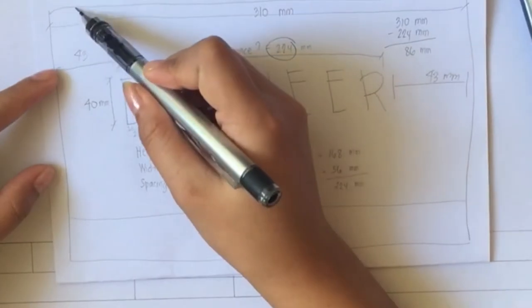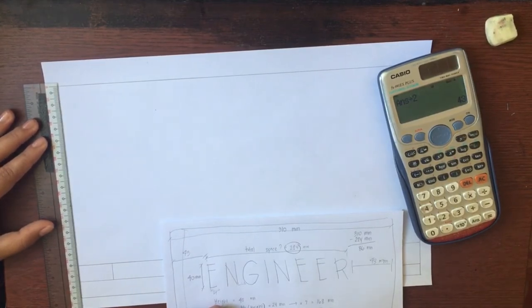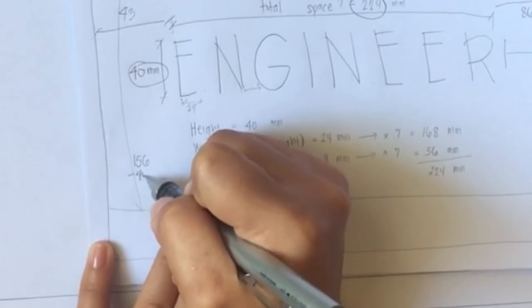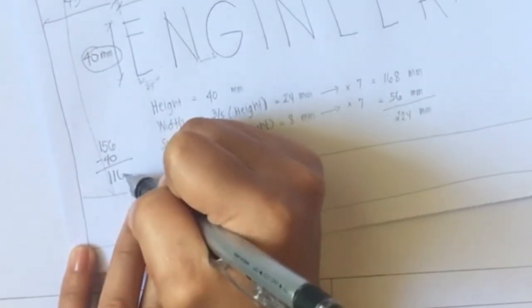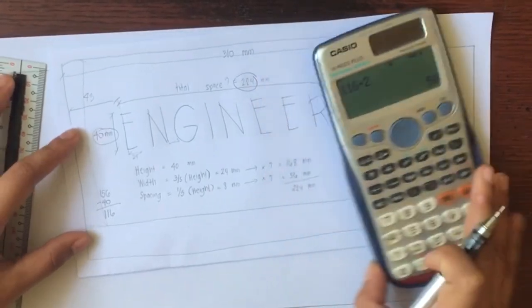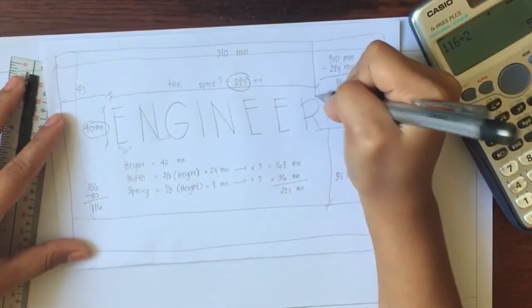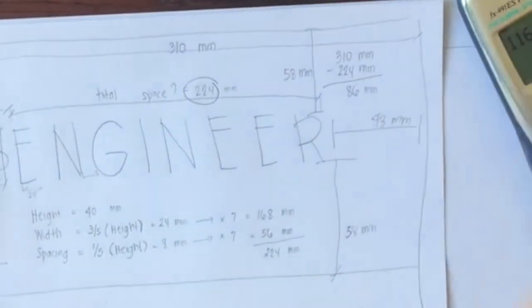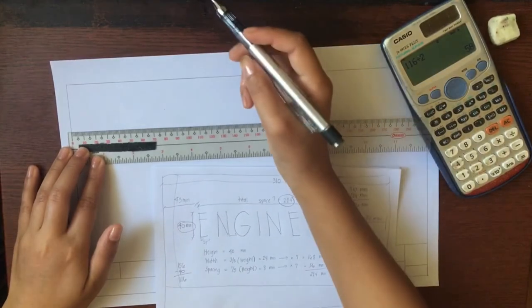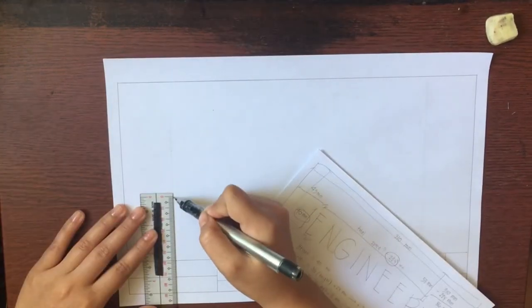The next thing to do is that we will measure the dimension from the upper margin to the lower margin. So that equals to 156. And because we have a height for each letter, which is 40 millimeters, we will minus 40 from 156, so we have 116 millimeters. That would be divided into 2 because we have the upper space and the lower space, so that would be 58 millimeters. So 58 millimeters for the upper part and 58 millimeters for the lower part.